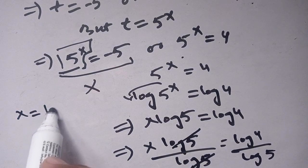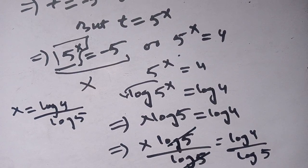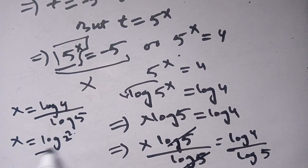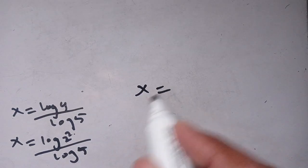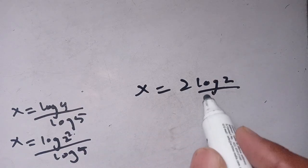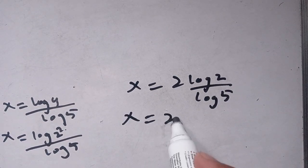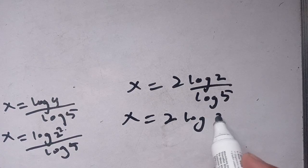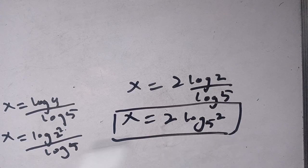Cancelling log of 5, we have x is equal to log of 4 divided by log of 5. For more simplification, we write it as x is equal to log of 2 squared divided by log of 5, which gives x is equal to 2 times log base 5 of 2. This is the value of x which satisfies our given exponential equation.